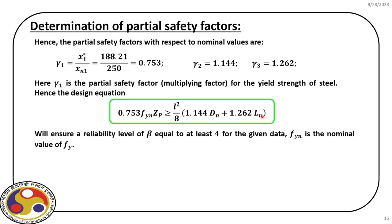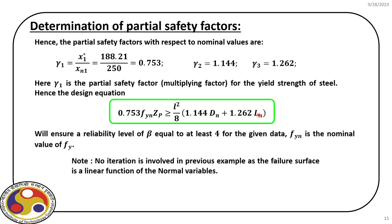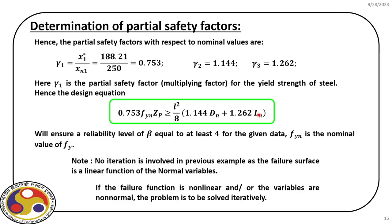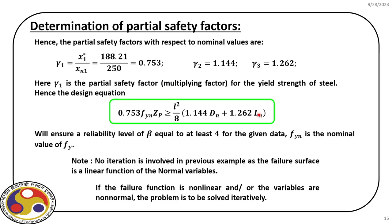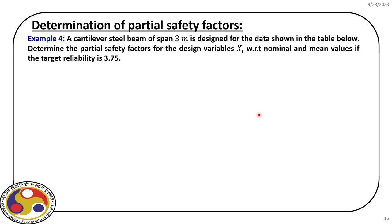We use nominal values fyn, dn, and ln, and find what value of zp satisfies the condition. Because the limit state equation is linear and all random variables are normal, Cornell's and Hasofer-Lind's definitions always give the same result, so no iteration is needed. However, if the limit state is nonlinear or random variables are non-normal, the iterative procedure is required.